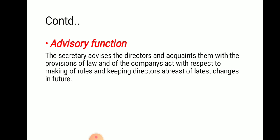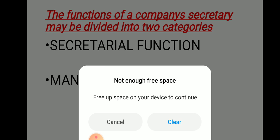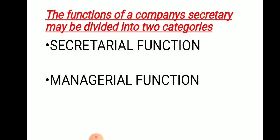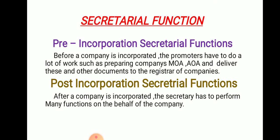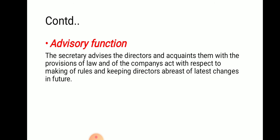To summarize the topic: when we talk about the functions of a company secretary, he performs two types of functions — secretarial functions and managerial functions. Under secretarial functions, he performs two functions: one before the incorporation of a company, and another after the incorporation. Under managerial functions, he performs three types of functions: planning, administrative, and advisory. I hope these functions are clear to you. Thank you and have a nice day.